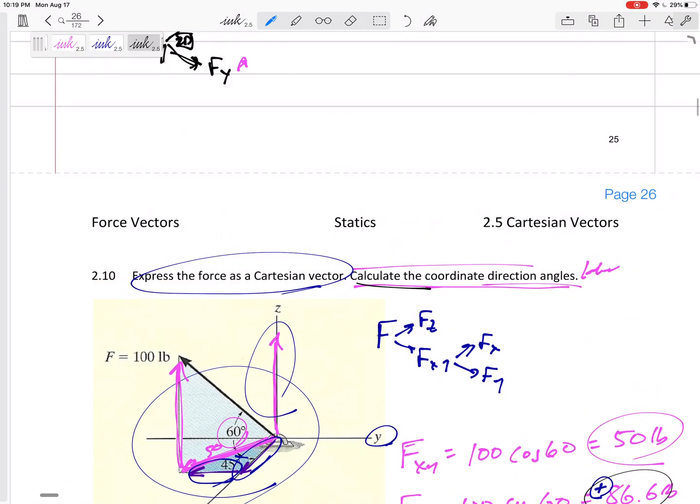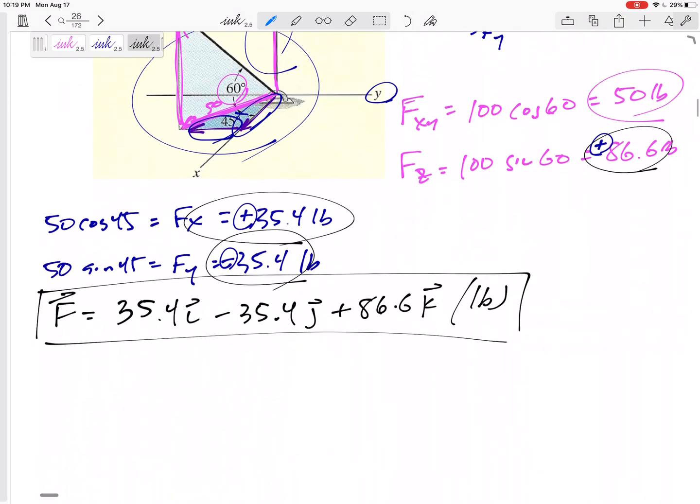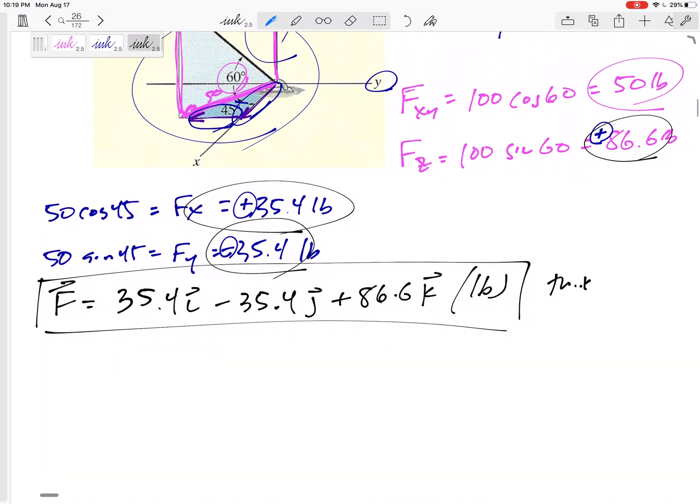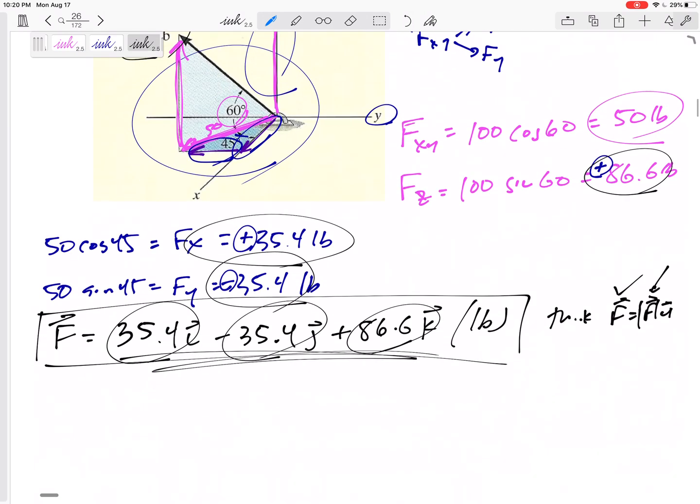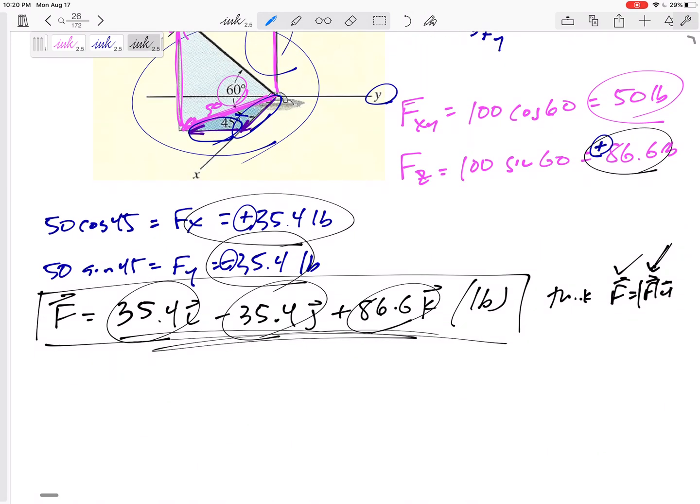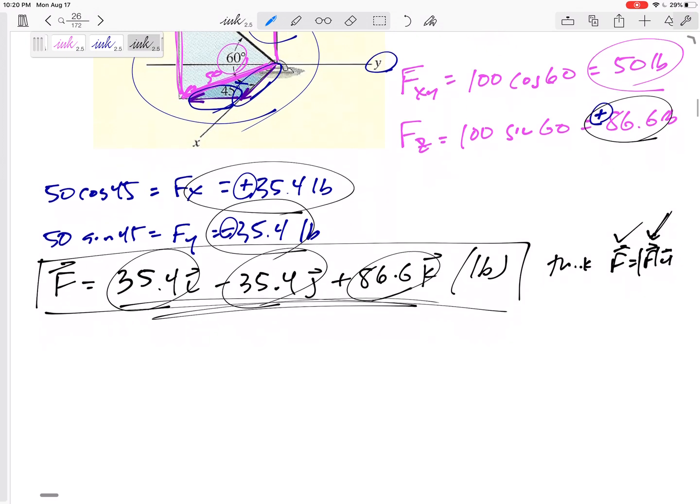Now the second part of it. Now let's calculate the coordinate direction angles. And so now I've got to think F equals F times U. This is kind of a separate problem, two separate problems. Now I've got this F. I think I kind of have the magnitude. What is the magnitude? I could double check, but I didn't do anything to this. This should still be 100. Yeah, so I've got this, I've got that. Now I can find the coordinate direction angles.